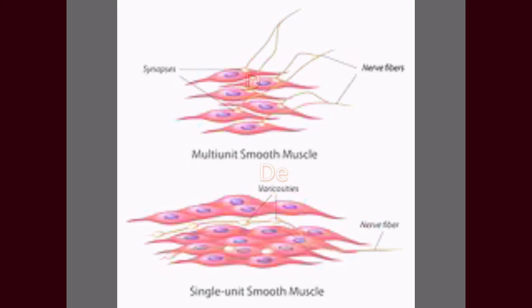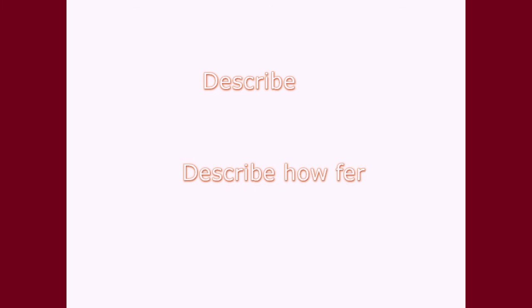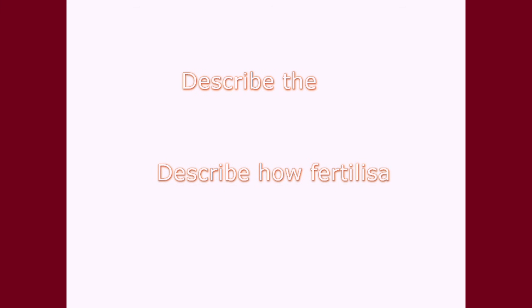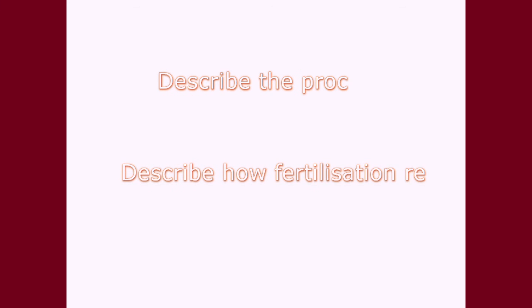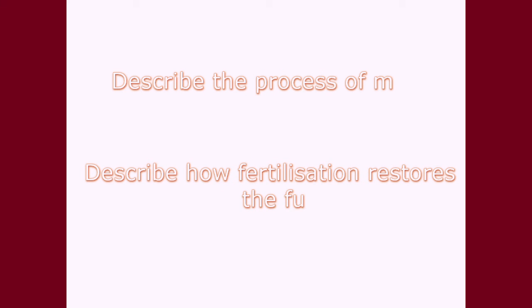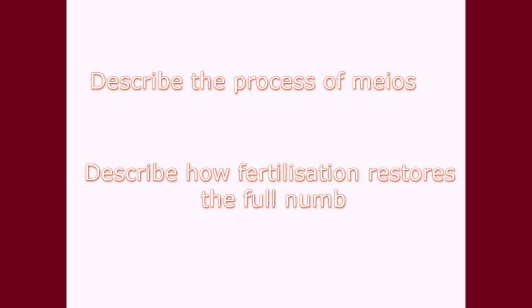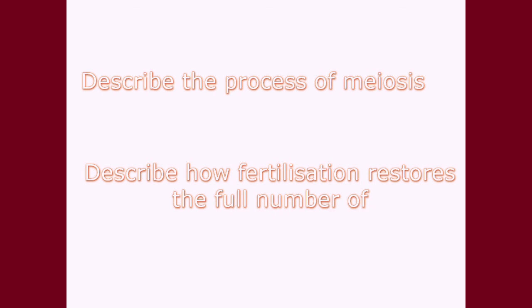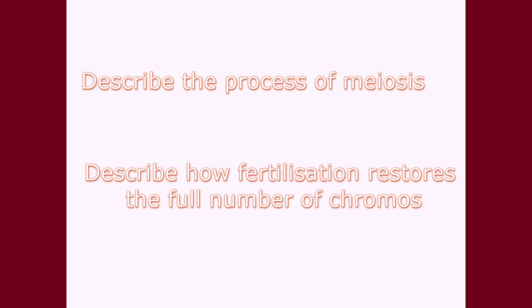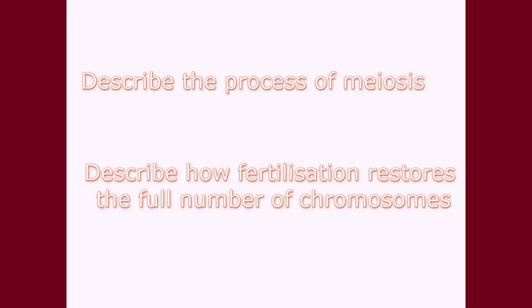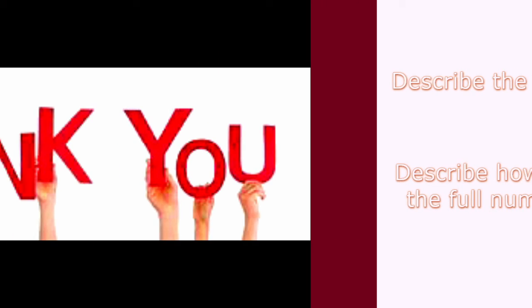Hopefully now you should be able to describe the process of meiosis and how it results in a halving of the number of chromosomes. You should then be able to describe how fertilisation restores the diploid number of chromosomes. Thank you for listening, and good luck with your exams.